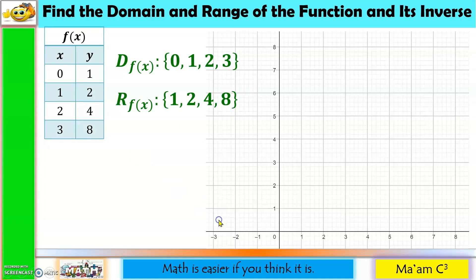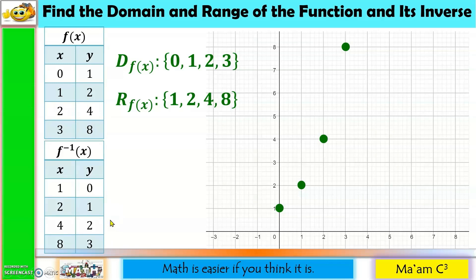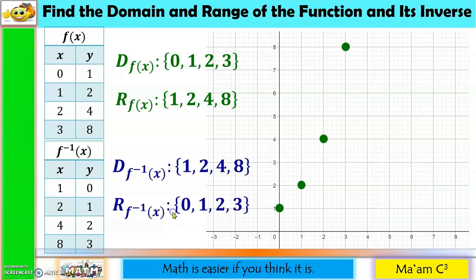We plot the points (0,1), (1,2), (2,4), and (3,8). For the inverse, we interchange the x and y values. So the domain becomes {1, 2, 4, 8} and the range becomes {0, 1, 2, 3}. Notice that the domain of the original function is the range of its inverse, and the range of the original function is the domain of its inverse.